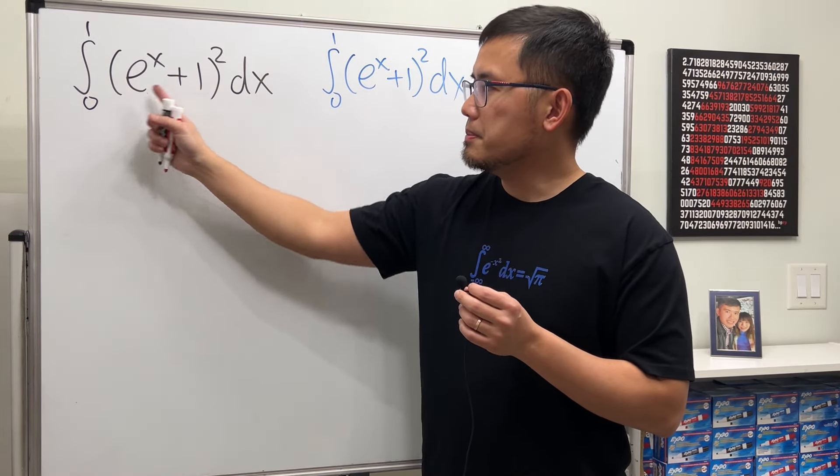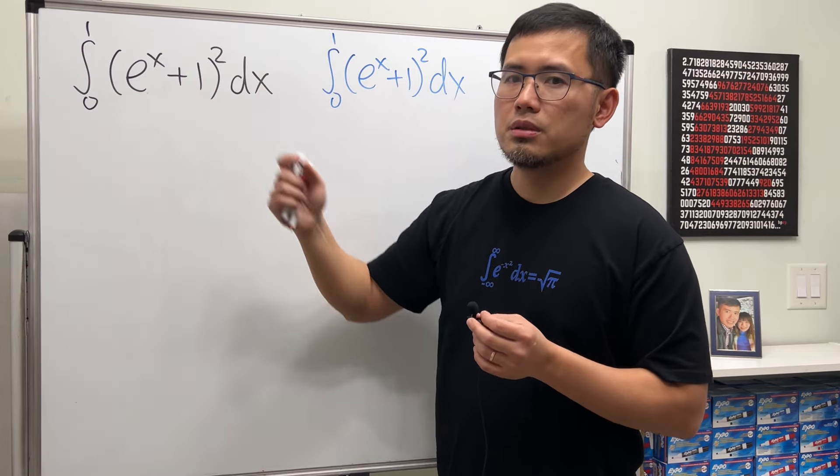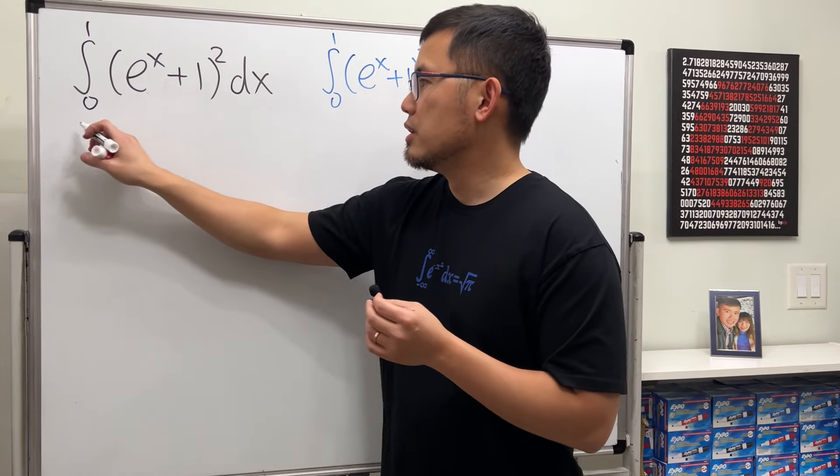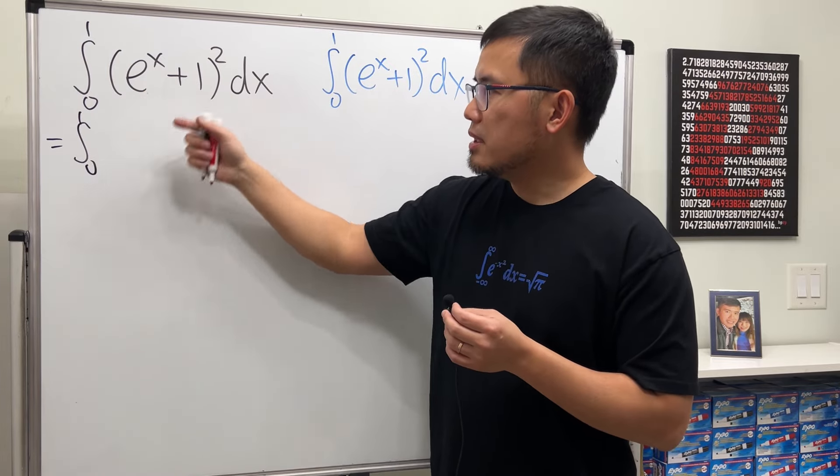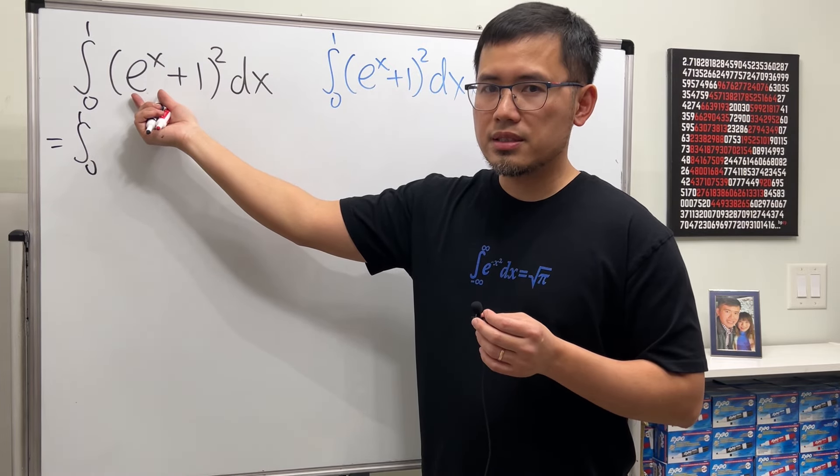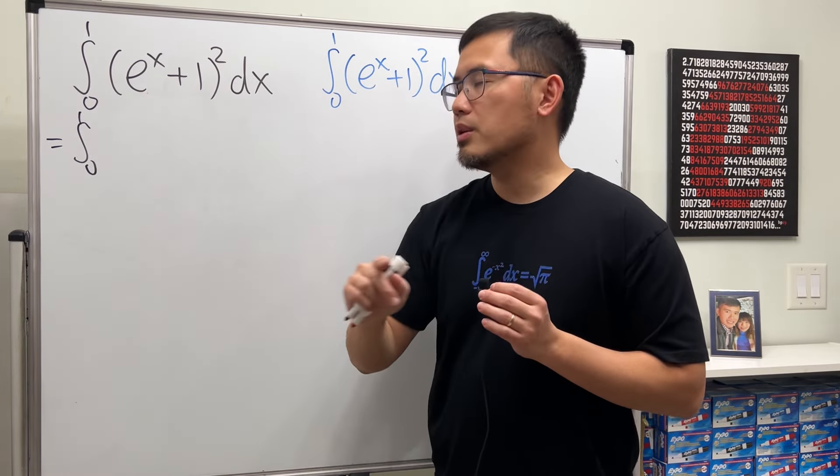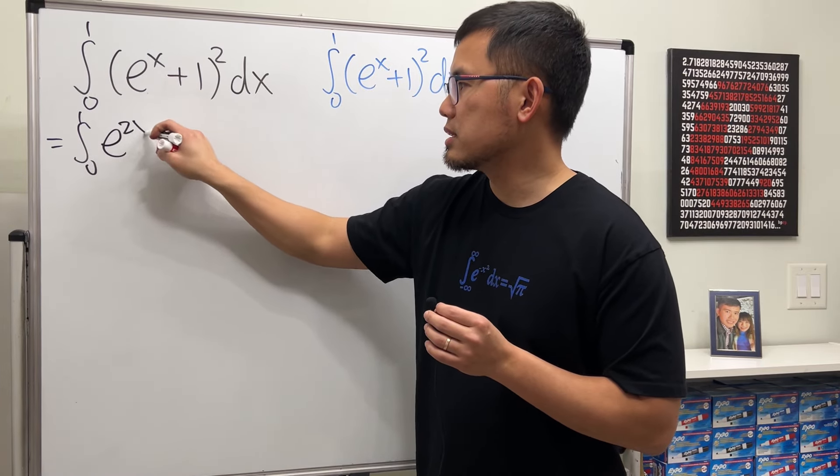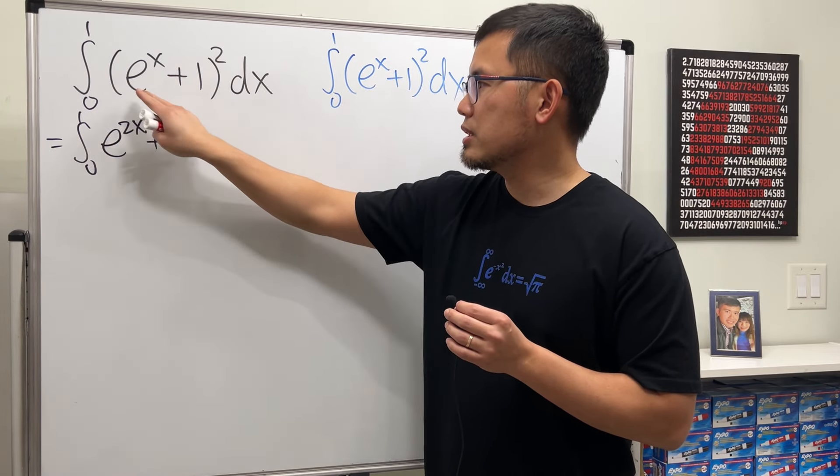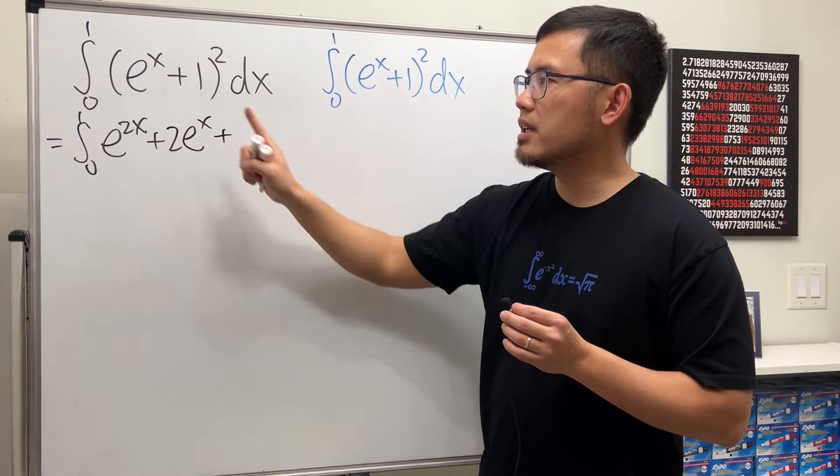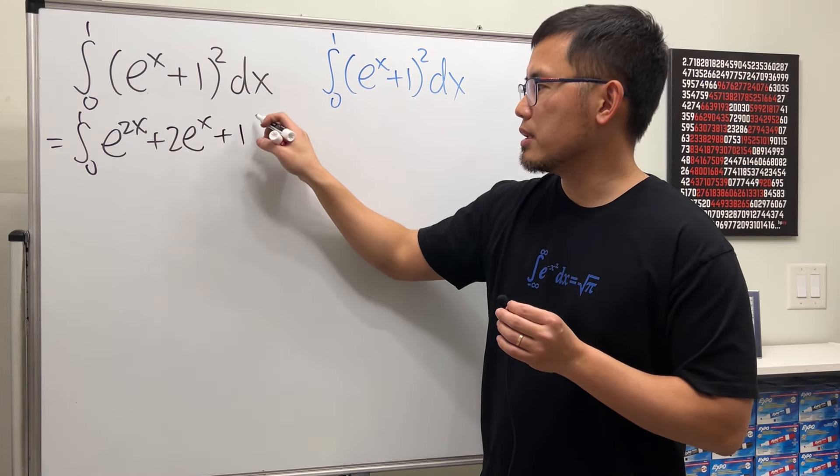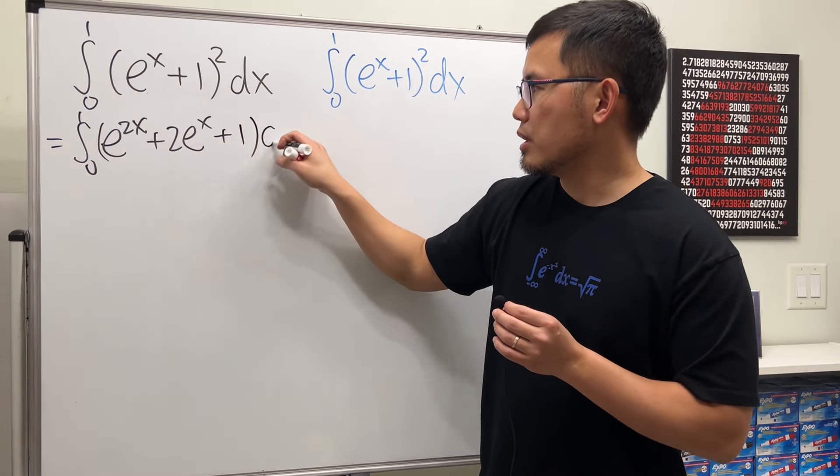Starting from the first one right here, we have this thing squared. Let's just multiply it out. So we will have the integral going from 0 to 1. To expand this, you first square the e to the x. e to the x squared, we get e to the 2x. And then we add 2 times this and that, which is 2e to the x. Finally, we add 1 squared, which is 1. And now we are ready to integrate.